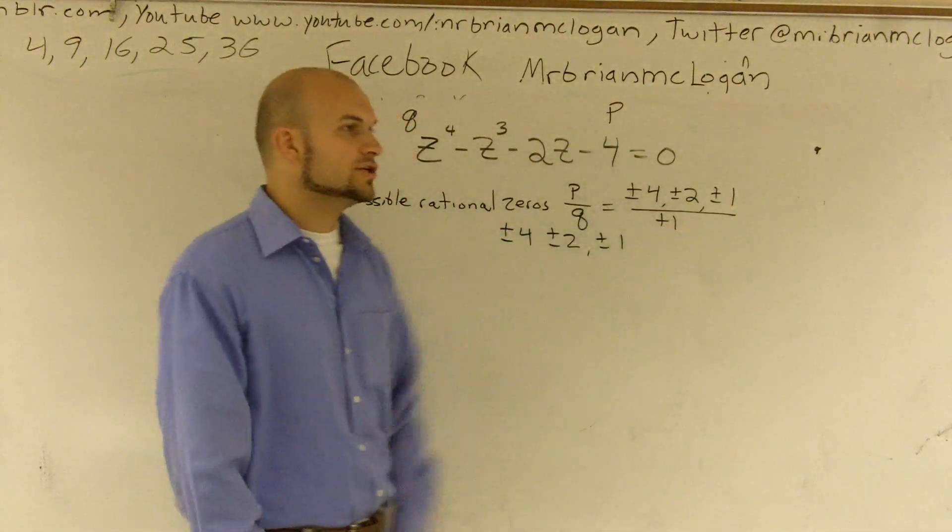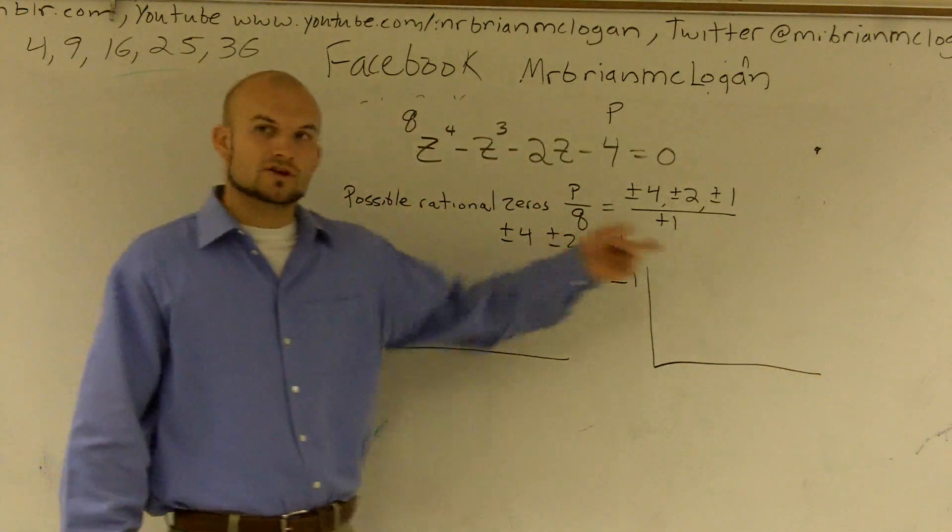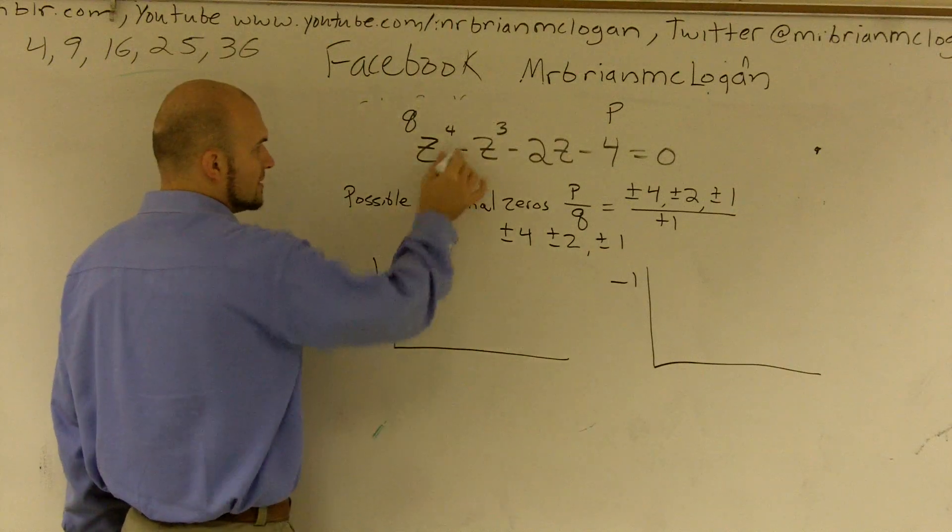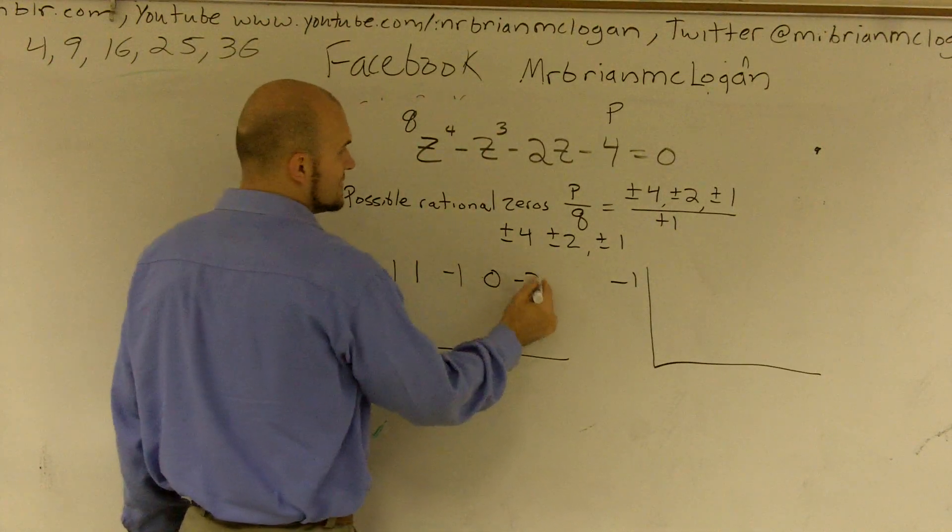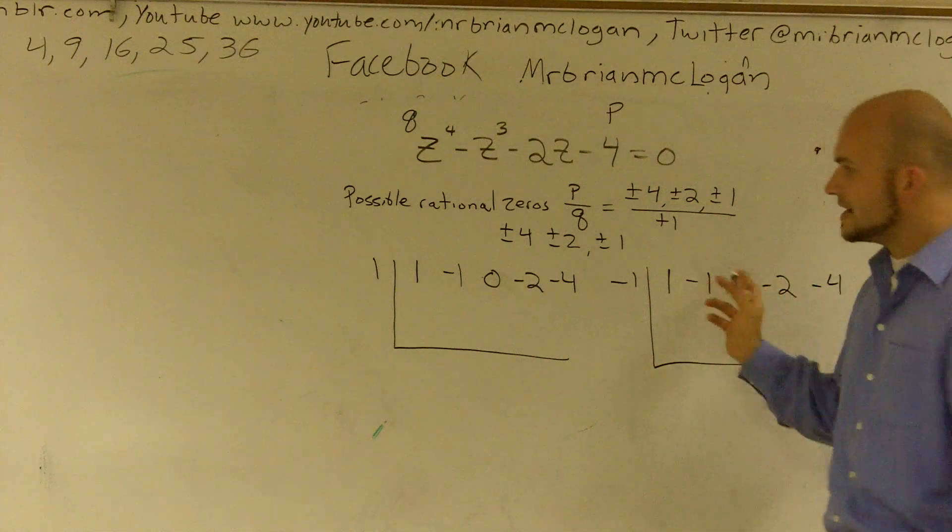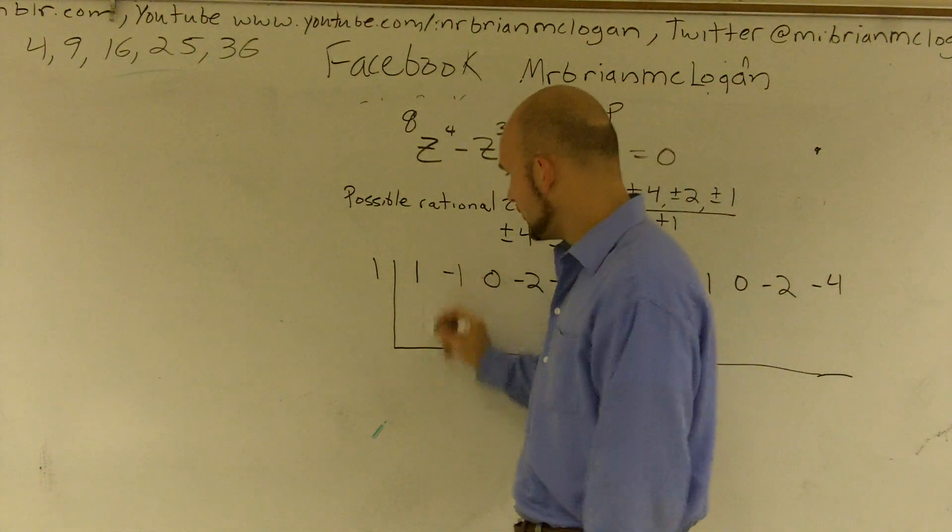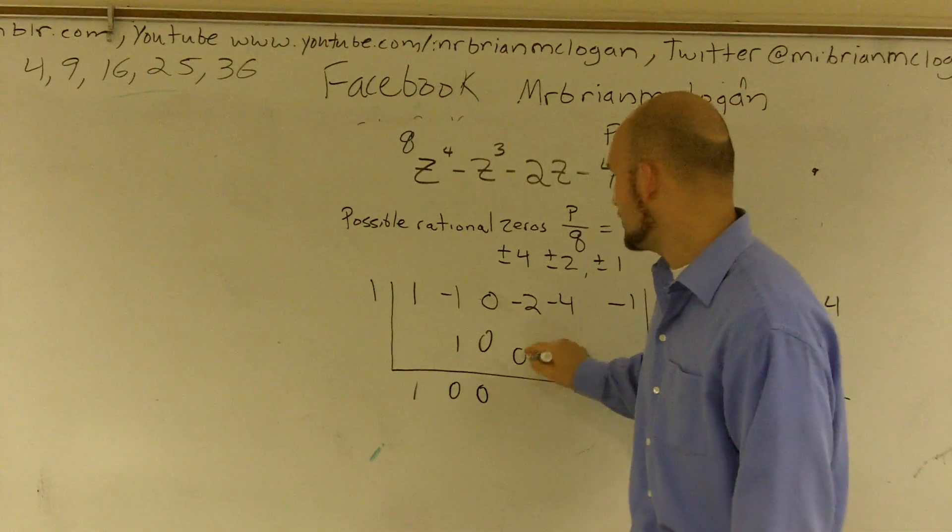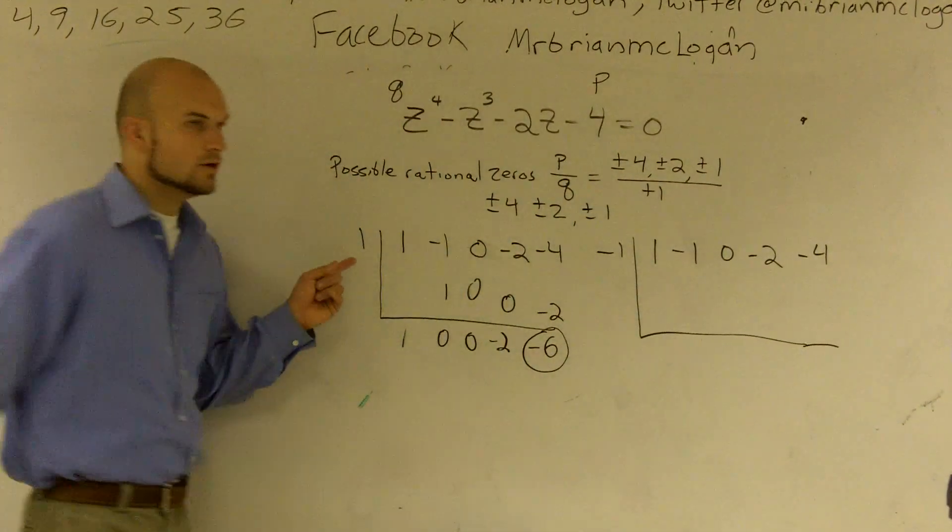I'm going to do the easiest ones. I'm going to do 1 as a zero, and I'm going to do negative 1 as a zero. It would be a lot easier if I graph this and I could see which one of those probably worked, but I don't have a graph utility. So I'm going to use synthetic division. I use my coefficients of each term. So 1 is for z to the fourth, negative 1 is for z cubed. I don't have a squared term, so that's 0. Then I have negative 2, negative 4. Now I'm just going to do synthetic division. Drop down my 1. 1 times 1 is 1. 1 times 0 is 0. 1 times 0 is going to be 0, which becomes negative 2. 1 times negative 2 is negative 2, which becomes negative 6. Therefore, 1 is not a zero.